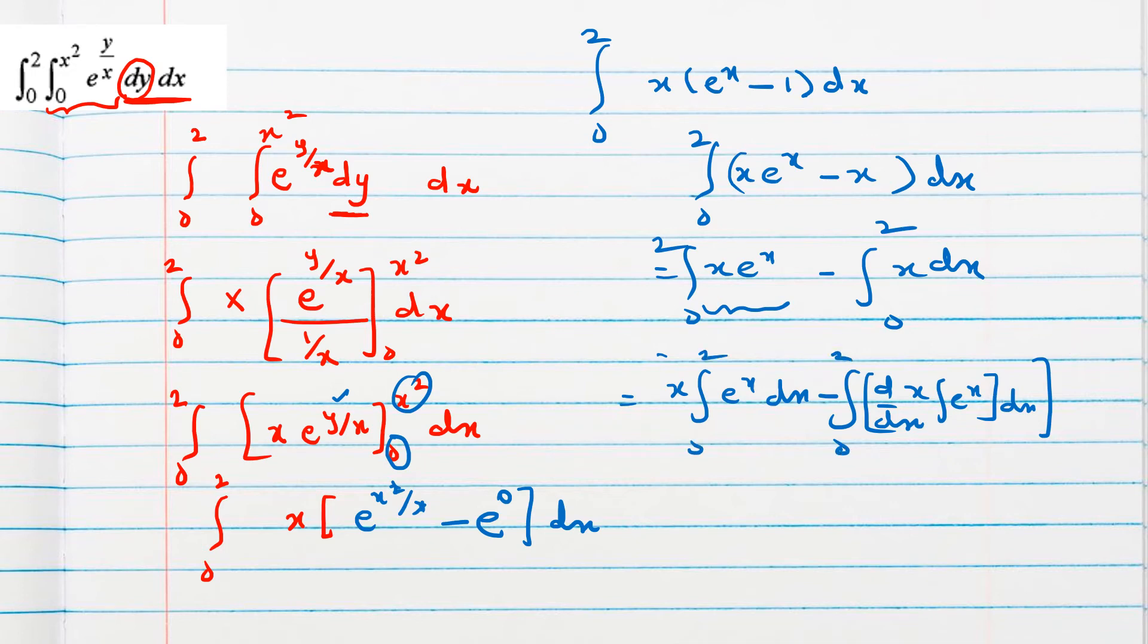And here x square by 2, power rule we can use, between the limit 0 to 2. So x e power x will remain same, derivative of x is 1, e power x will remain same between 0 to 2. And this will be 4 by 2 minus 0, means 2 only.